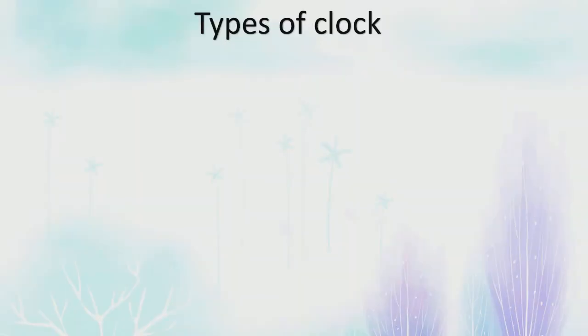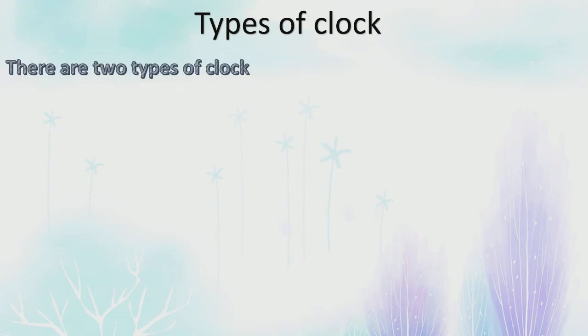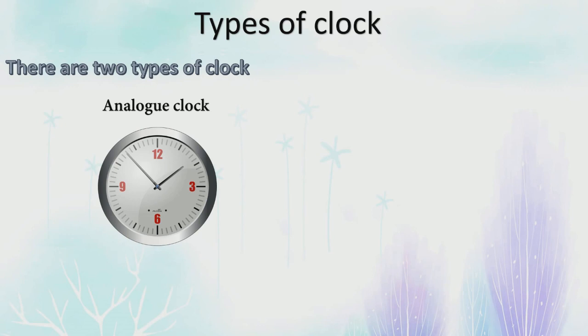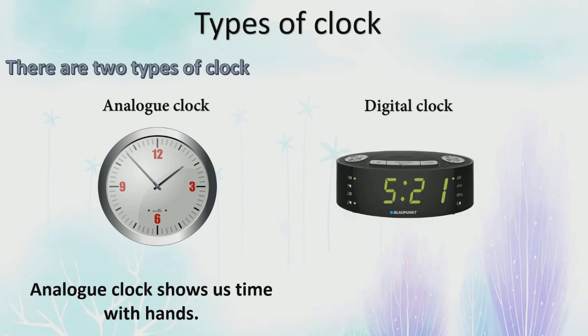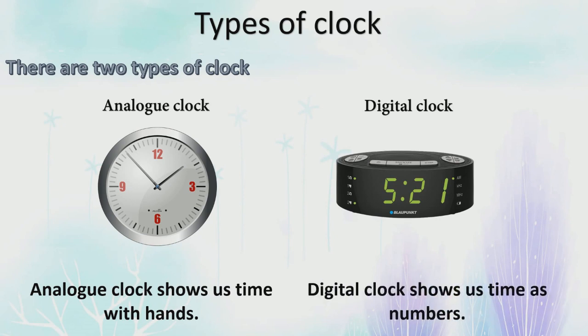Our next heading is types of clock. There are two types of clock. One is analog clock. Here is an image of an analog clock. Here is an image of a digital clock. Digital clock shows us time as numbers — you can see 5:21 is written, that is a number.